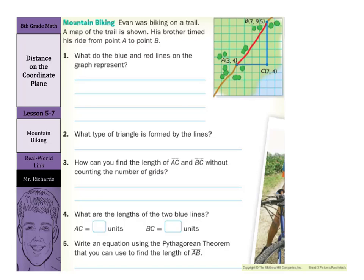Evan was biking on a trail. A map of the trail is shown. His brother timed his ride from point A, which is there, to point B, which is up here. What do the blue and red lines on the graph represent?